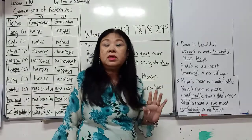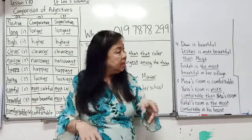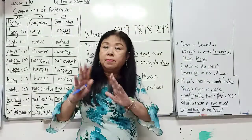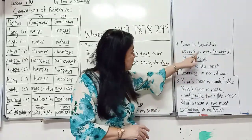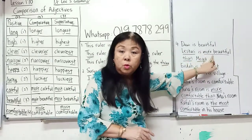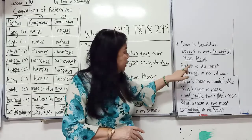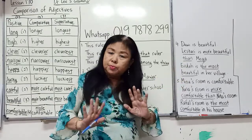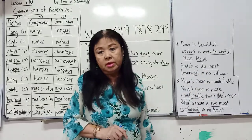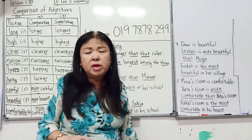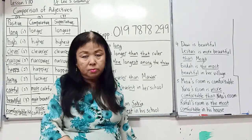Devi is beautiful — no comparison, it's just Devi. Lestari is more beautiful than Medha — when you use more, you must put than. And Enda is the most beautiful in her village — the most. For beautiful, you cannot say beautifuler or carefuller; you put more or you put most.